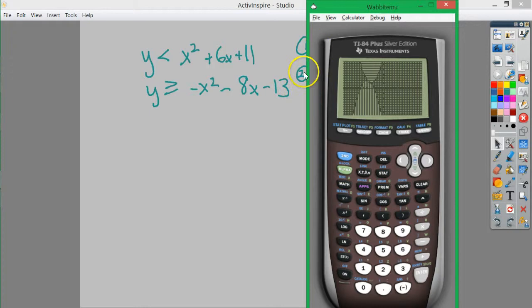Just based on the fact that this one's a negative, and it's shading up, because it's greater than, and this one's a positive, and it's shading down, because it's a less than.